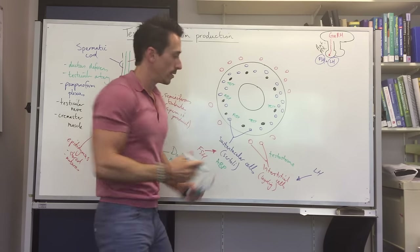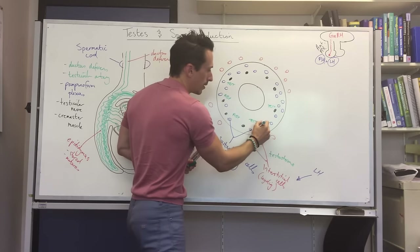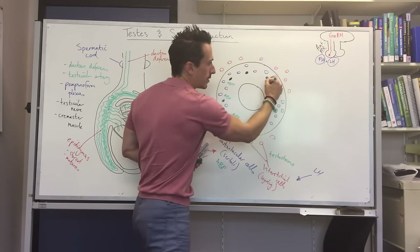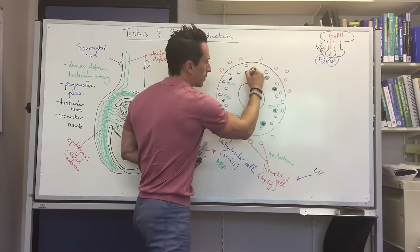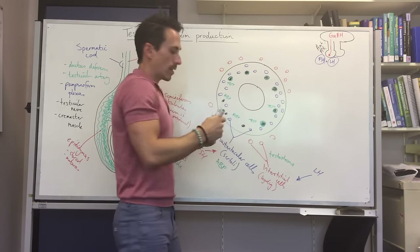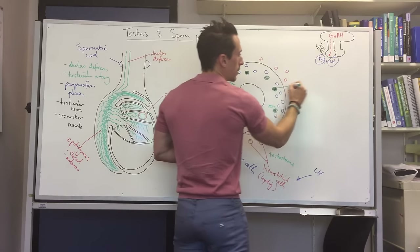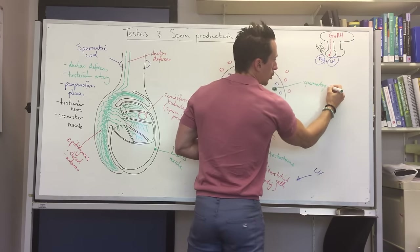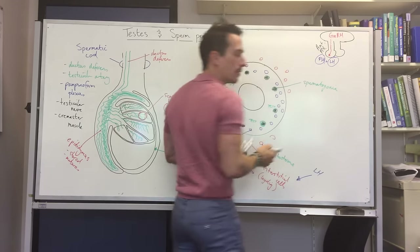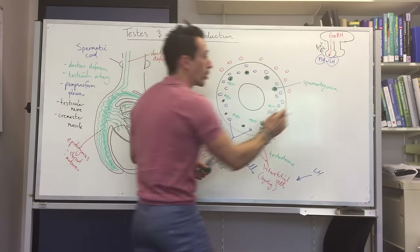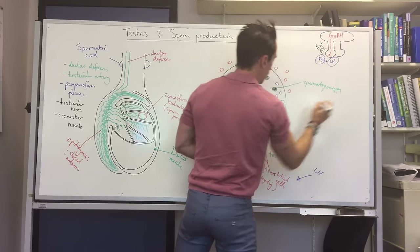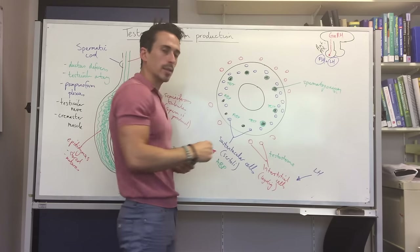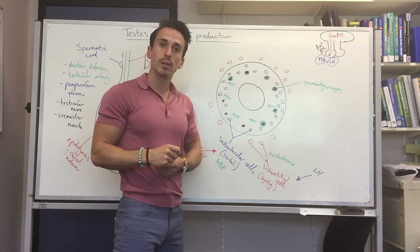Together, ABP and testosterone stimulate the stem cells — called spermatogonia (or spermatogonium) — to start producing sperm.